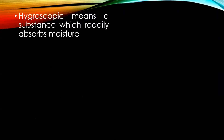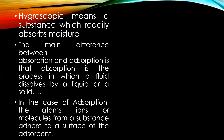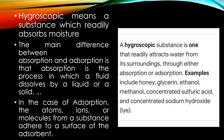The next term is hygroscopic, which means a substance that readily absorbs moisture. The main difference between adsorption and absorption is that absorption is a process in which a fluid dissolves into a liquid or solid, whereas adsorption means atoms, ions, or molecules from a substance adhere to the surface of the absorbent. Examples include honey, glycerine, ethanol, methanol, concentrated sulfuric acid, and concentrated sodium hydroxide, which is lye.